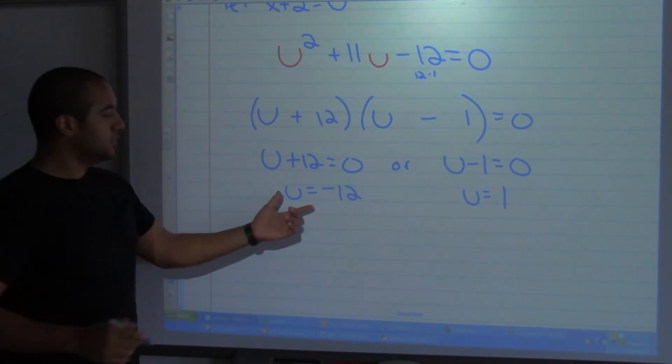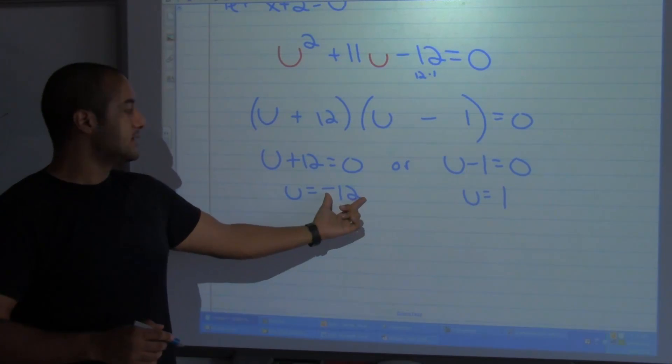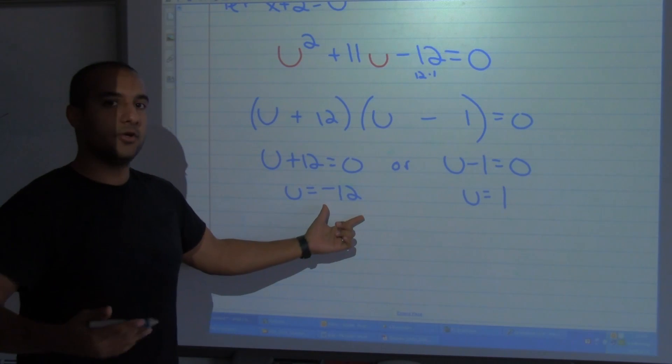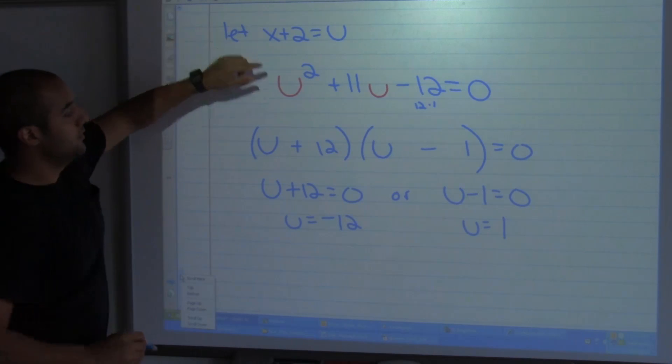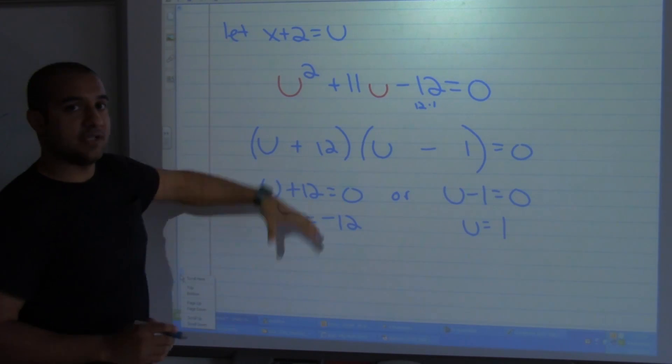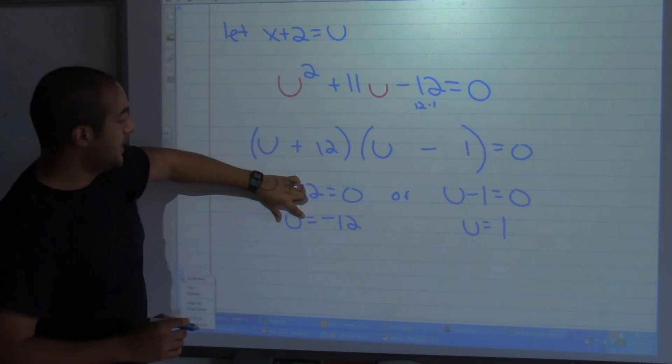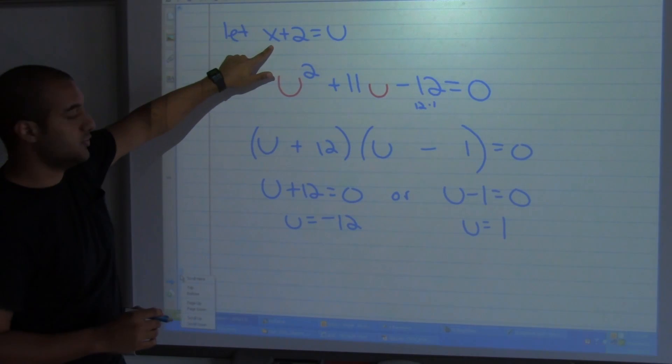And remember this is the same as saying u is equal to negative 12 or u equals 1. But we don't want to know u, we want to know about x. So here I'm going to change back. My u is going to become x plus 2.